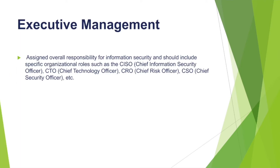First of all, we have got executive management. The responsibility for executive management is basically everything — overall responsibility. This includes the Chief Information Security Officer, that is CISO, then Chief Technical Officer, CTO, Chief Risk Officer, or Chief Security Officer. These come under executive management, and these executive-level roles are responsible for overseeing the full enterprise information security strategy, making sure that whatever information assets the organization has are properly protected.